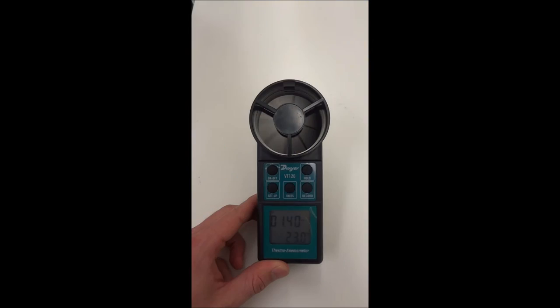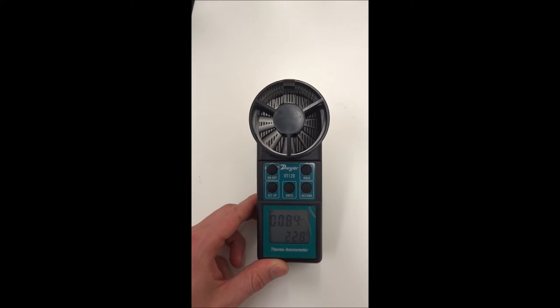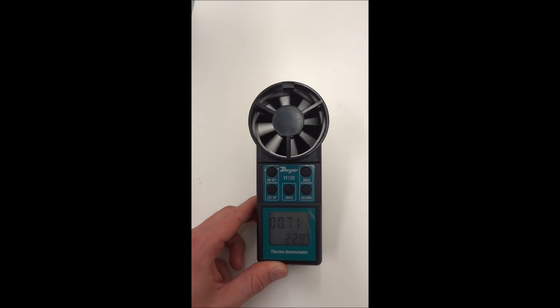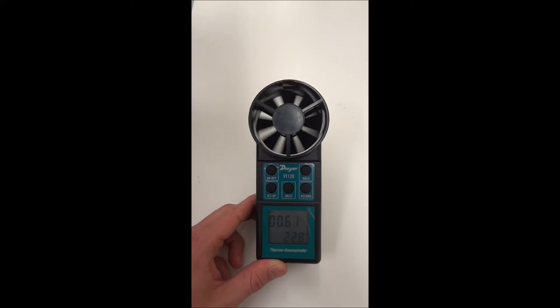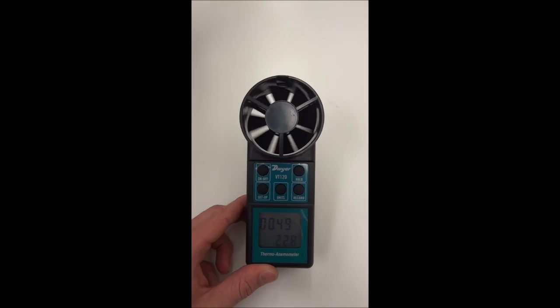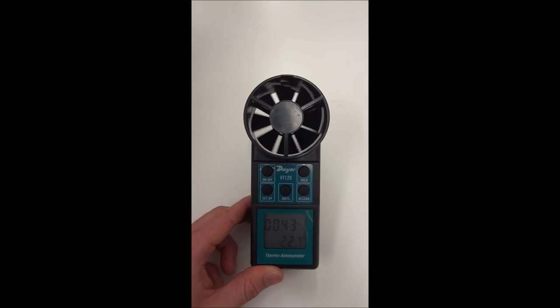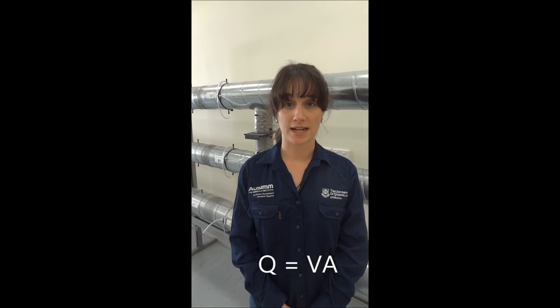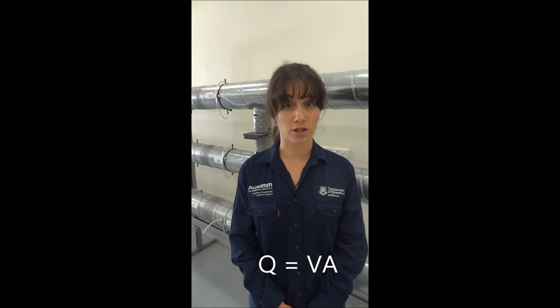The final method is by using a vane anemometer. It works by airflow rotating the blades in the fan, and a gearing and clutch system inside allows the velocity and temperature of the air to be calculated and displayed on the screen to within an accuracy of about five percent. Quantity is the product of velocity and area, so by calculating the velocity and measuring the area of the duct we can calculate the airflow through the tube. The temperature will be used to calculate the density of air from the ideal gas law.